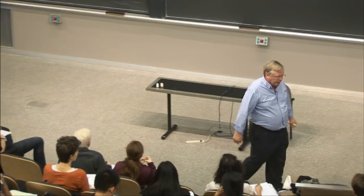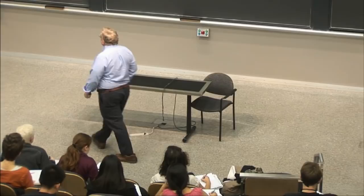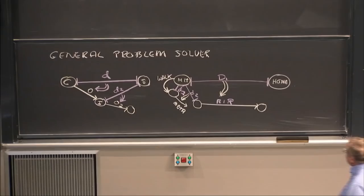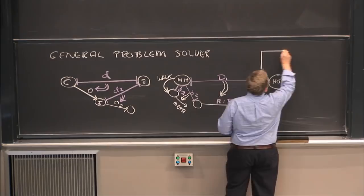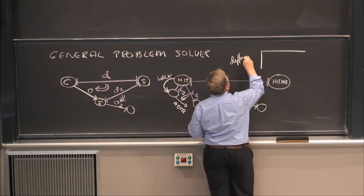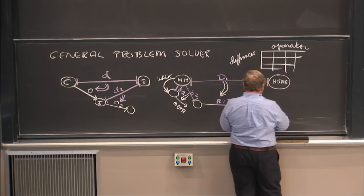It didn't turn out that way because the problem of collecting the differences and finding the operators, that's outside the scope of the architecture. So this is the problem that has to be solved by a human before this architecture can be used. You have to have identified the differences that you might encounter and the operators that you might use and build this table which relates the two together. But building that table turned out to be a hard job.